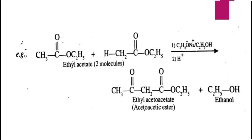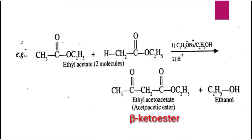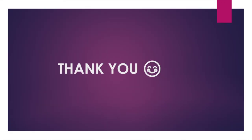For example, two molecules of ethyl acetate undergo self-condensation in the presence of sodium alkoxide and ethanol to give ethyl acetoacetate, which is a beta-keto ester. The keto group is at the beta position, so it is called a beta-keto ester. The mechanism of Claisen condensation will be discussed in the eighth chapter.